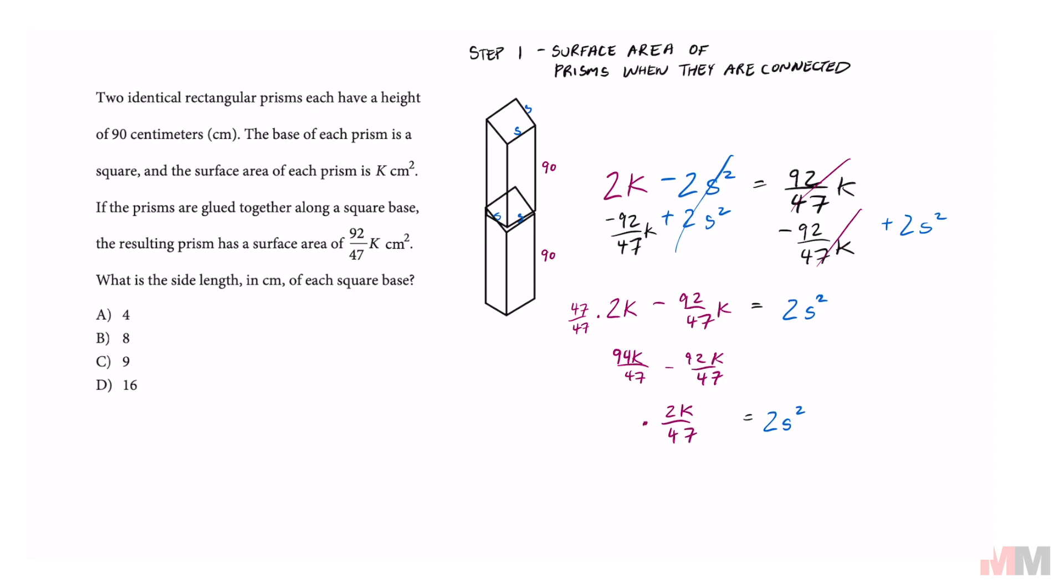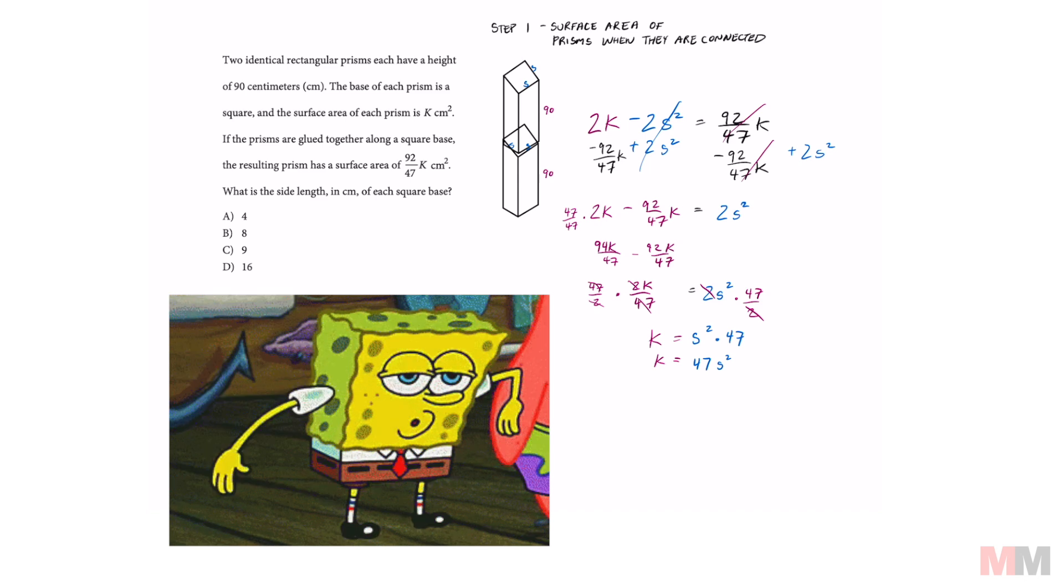And to get K by itself, multiply by the reciprocal of 47 over 2. All those will cancel out and you get K equals, the two cancels out right here, S squared times 47 or 47S squared. That is probably the hardest part of the problem.